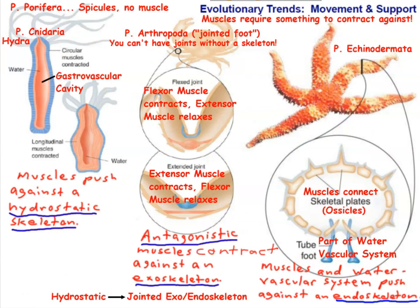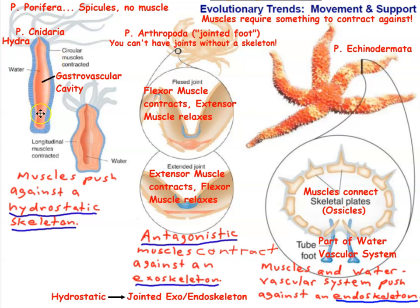Finally, we look at the musculoskeletal system — the system responsible for support and movement. An important principle is that muscles require something to contract against. Even without a hard skeleton, muscles still need something to push against. In simpler animals, that's a hydrostatic skeleton — a fluid-filled cavity under pressure that supports the animal and gives muscles something to contract against. Sponges (Porifera) have no muscle tissue and don't move, but do have supportive spicules — small pieces of calcium carbonate or silica that interlock to support the animal.